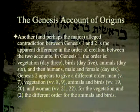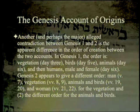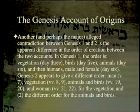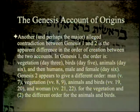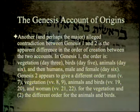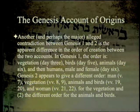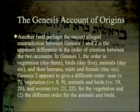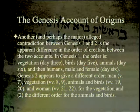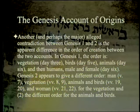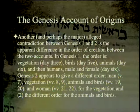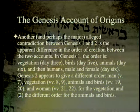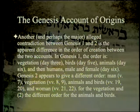Another major alleged contradiction is the apparent difference in the order of creation between the two accounts. In Genesis 1, the order is: vegetation day 3, birds day 5, animals day 6, then humans male and female day 6. Genesis 2 appears to give a different order: man (verse 7), vegetation (verses 8-9), animals and birds (verse 19), and finally woman (verses 21-22).